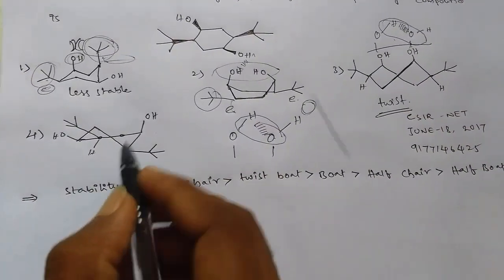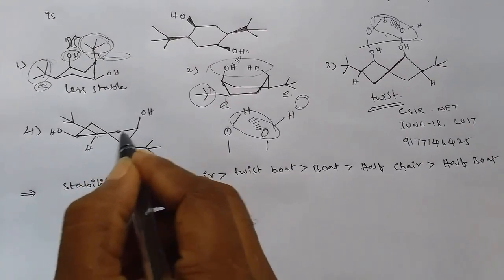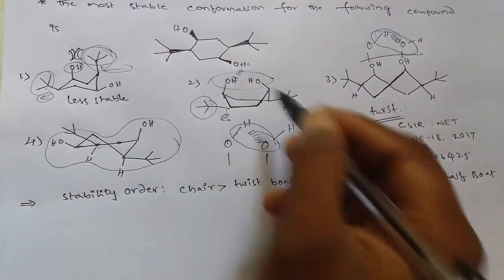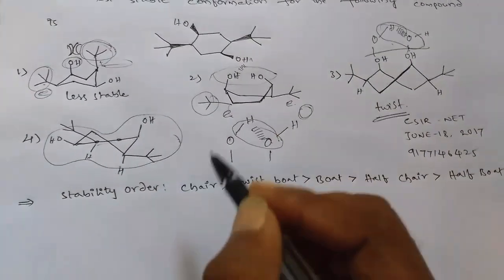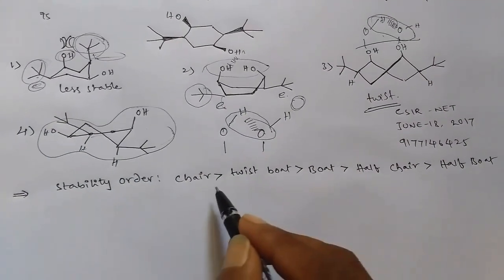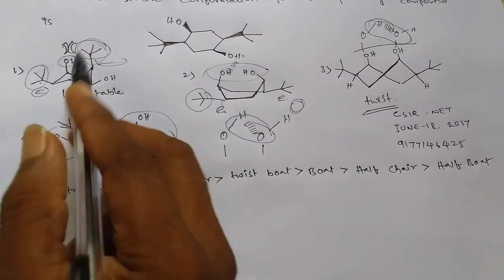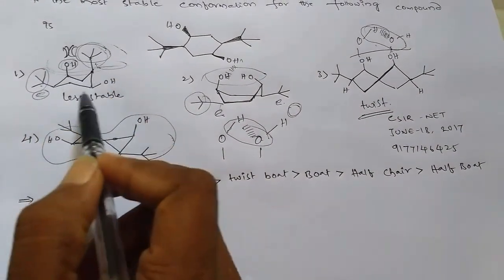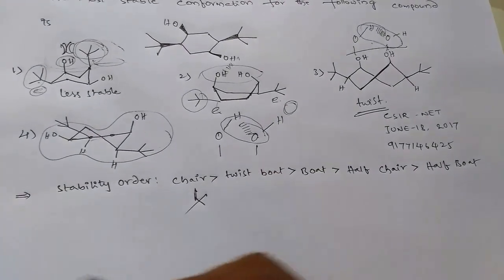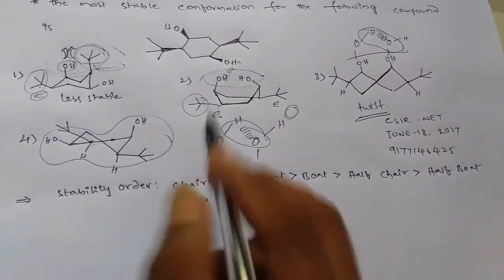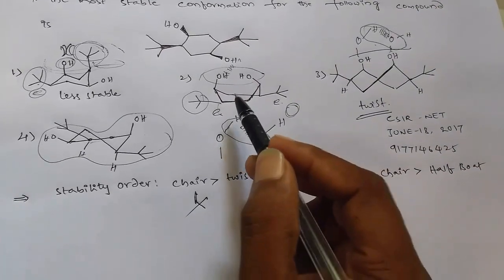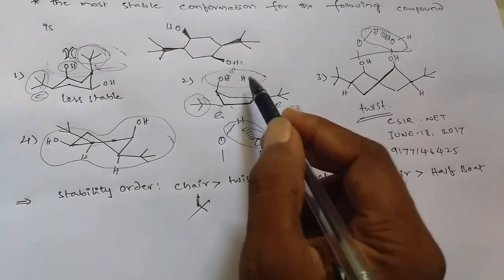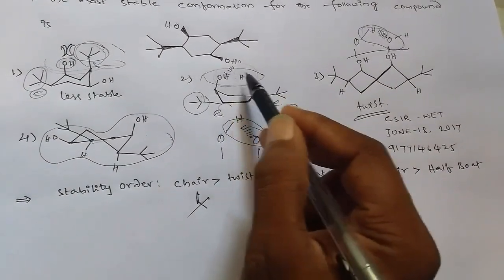The fourth option is the half chair, which may also compete with the other structures. However, recall that the chair form is not the most stable here because the bulky groups are in axial positions, causing steric problems. For the boat and twisted boat forms, both have stability advantages because hydrogen bonding is possible in each case.